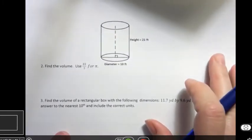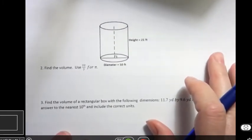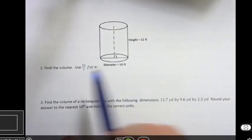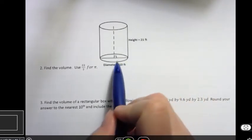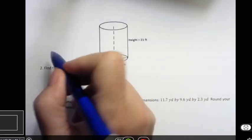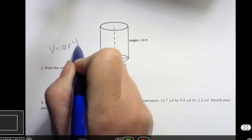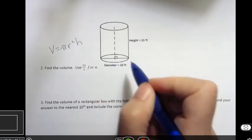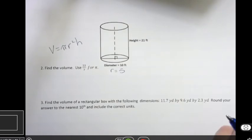Alright, another one looking at a cylinder and we're asked to use 22 7ths for pi. So if I want the radius, because I know my formula is pi r squared h, if the diameter is 10 then what's the radius? Well the radius then would be 5 because it's always half the diameter.